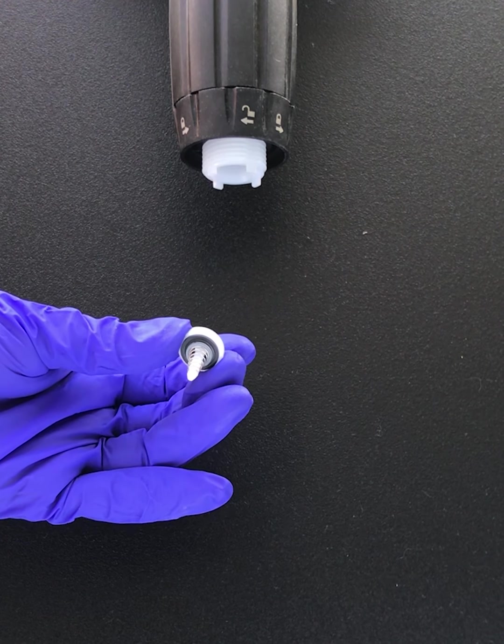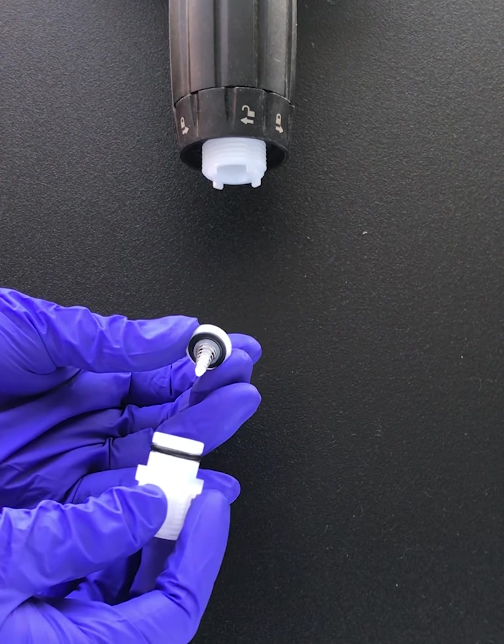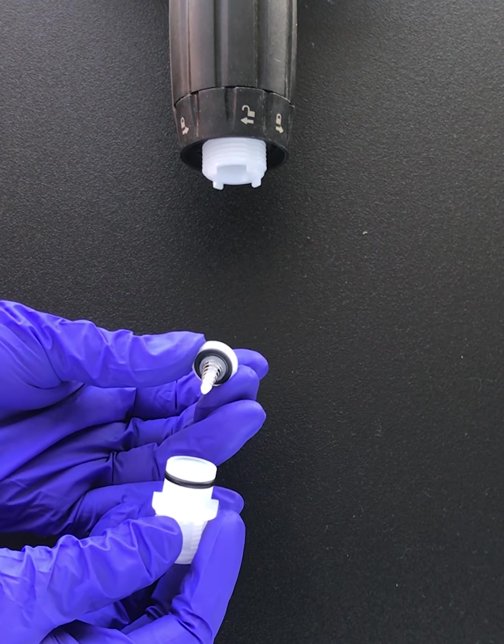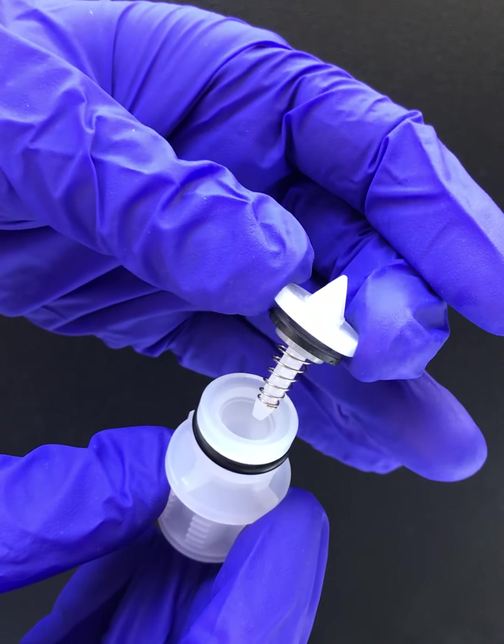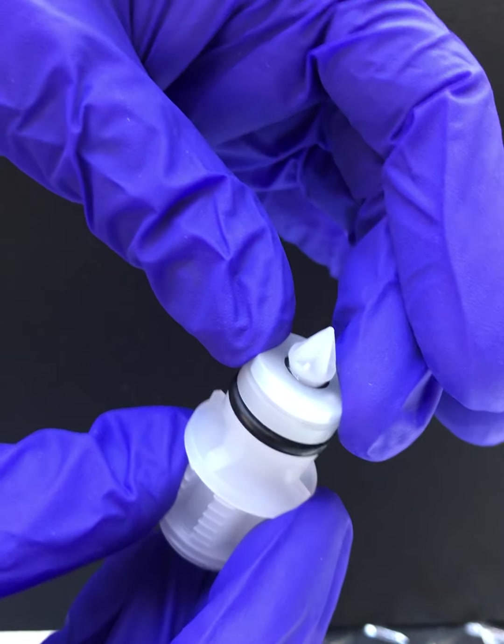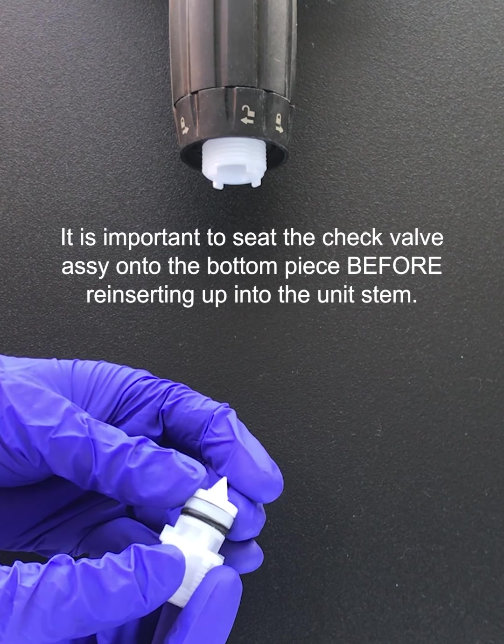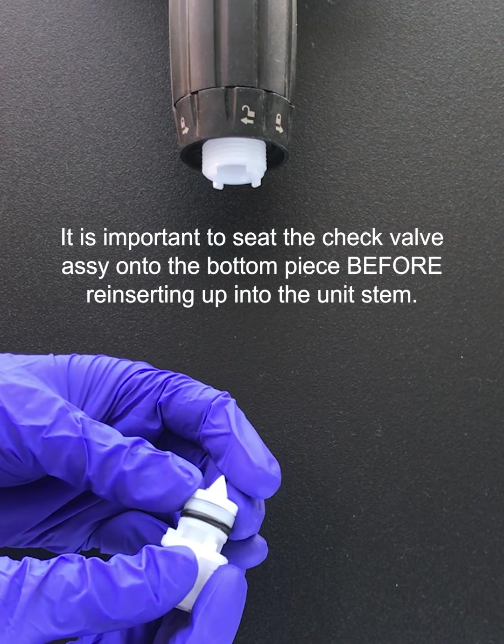Once the check valve has been thoroughly inspected, it is time to reinsert it onto the bottom piece. In order to do so, reinsert the spring downward first, making sure the black seal is sitting properly on the groove. You can wiggle it to make sure it is on there correctly.